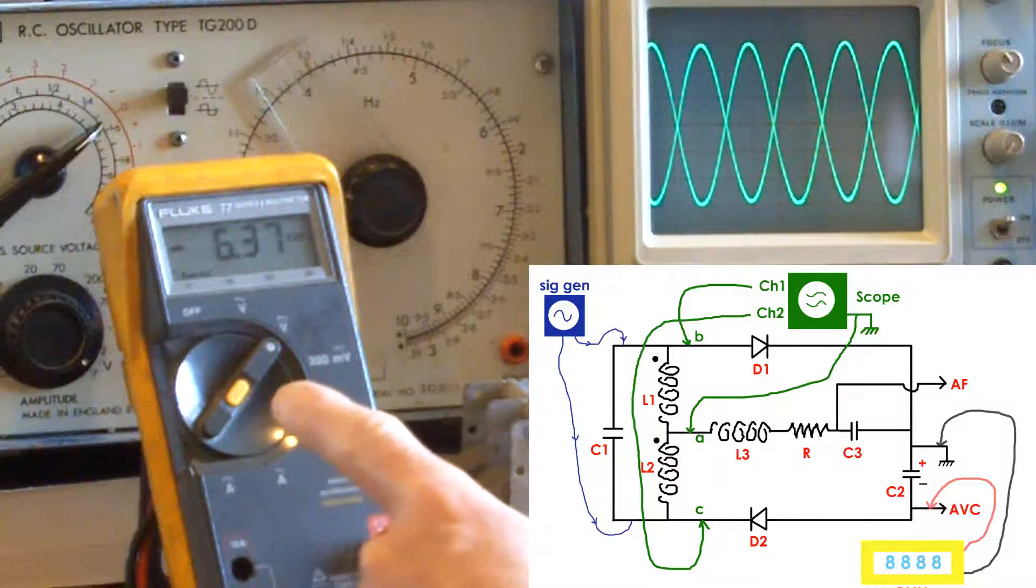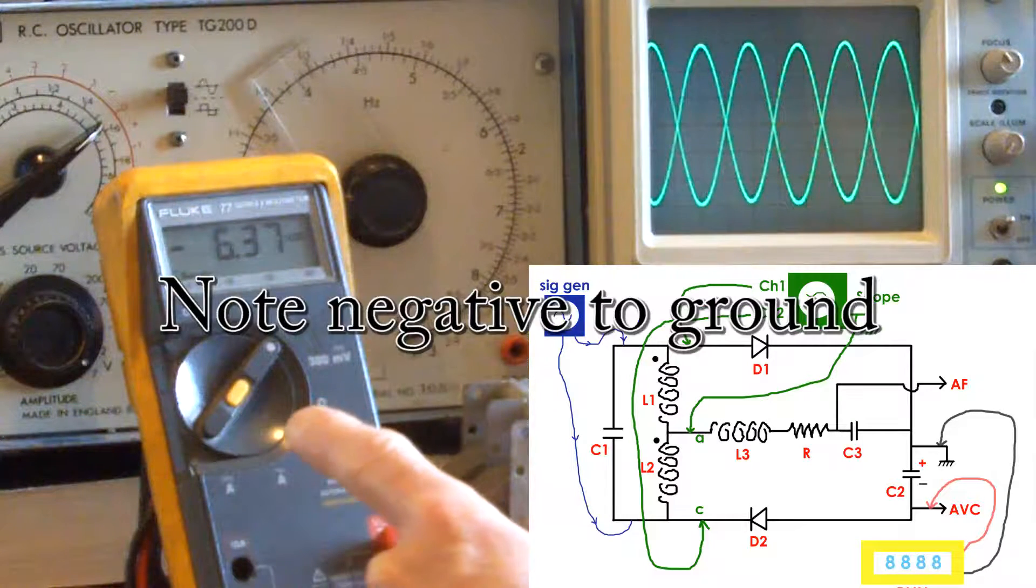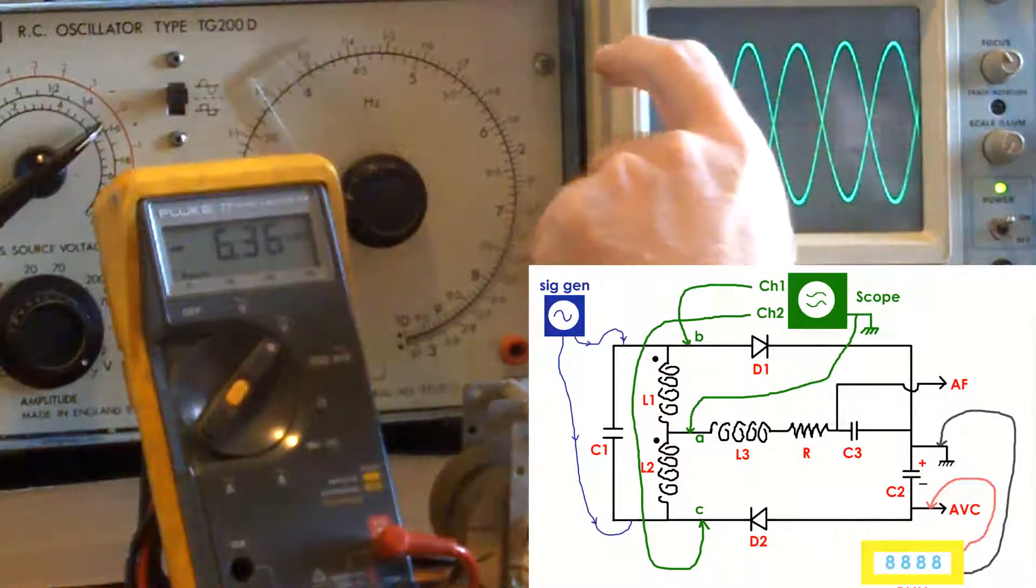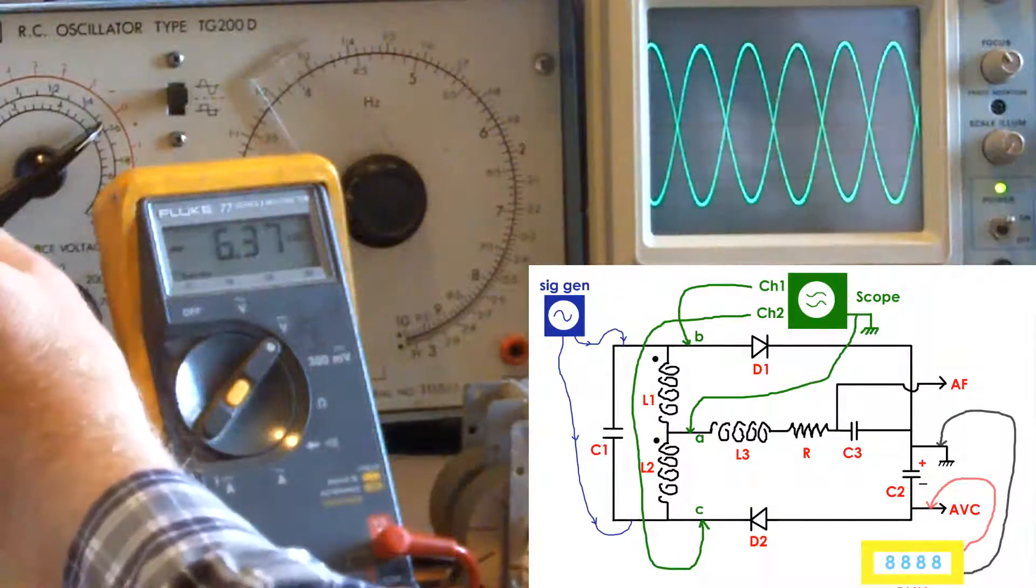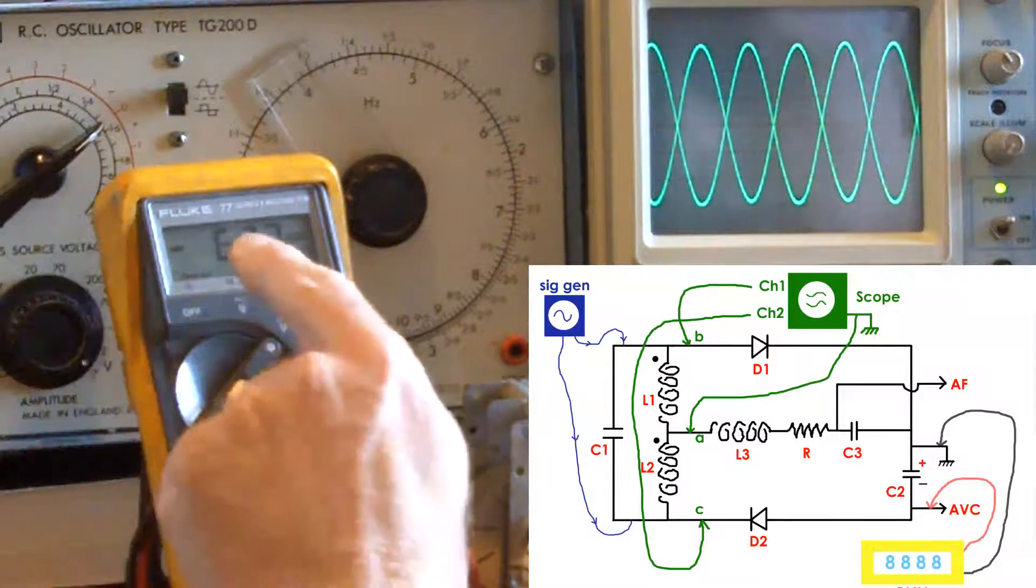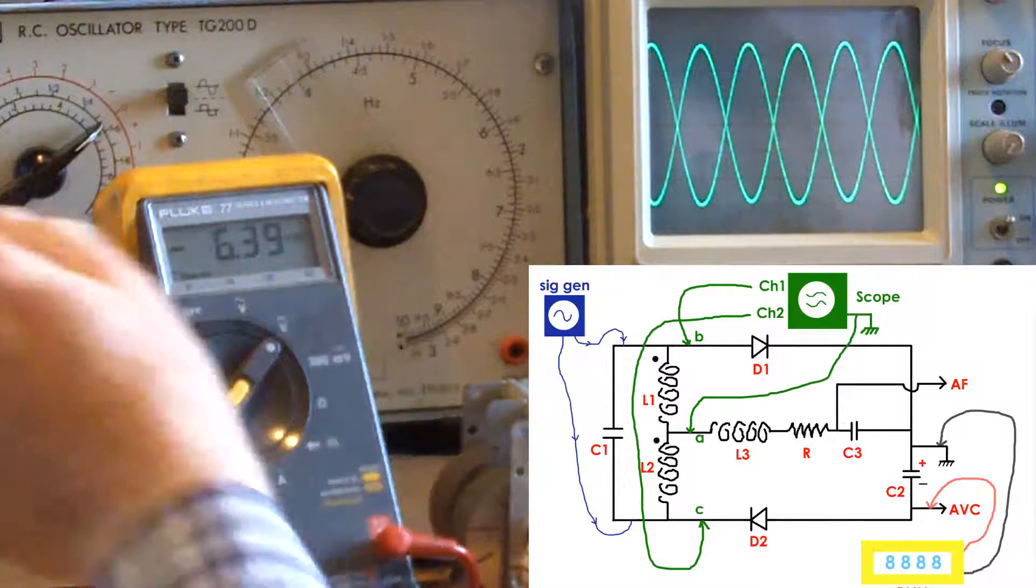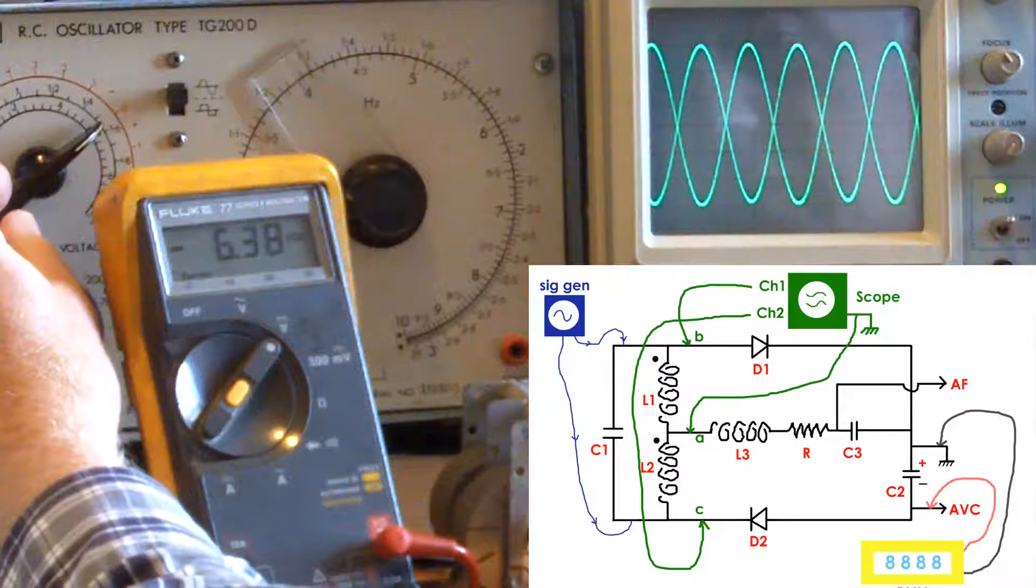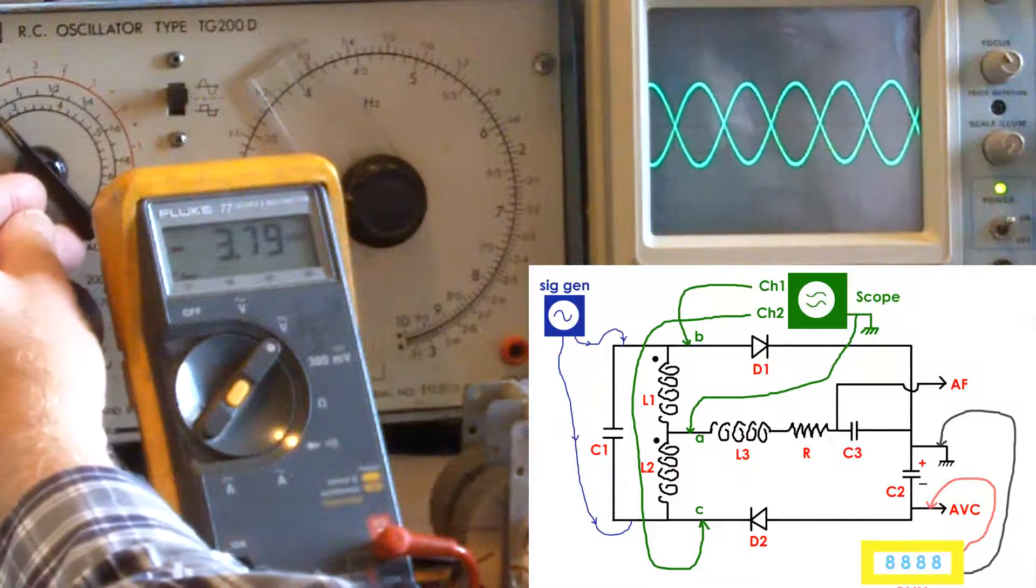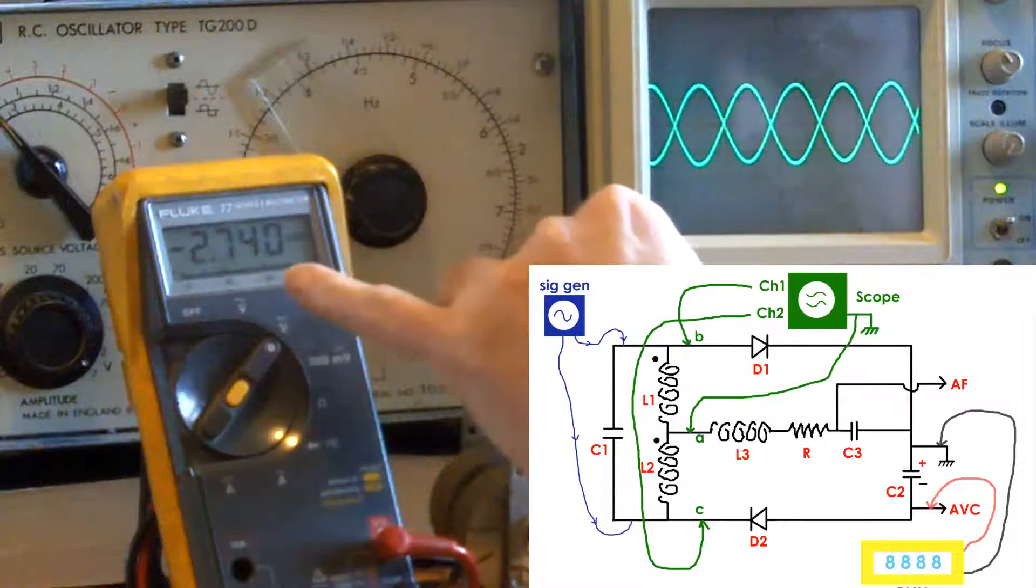The digital meter is connected across the electrolytic capacitor on the positive and negative. So we have a carrier wave that's coming in. And if I say that the station has become weak, at the moment we've got minus 6.39 volts there. If the station becomes weak there, so the voltage has reduced. It's gone down to 0.27.